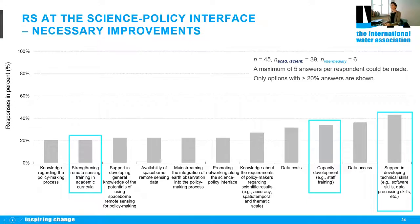We asked about necessary improvements to push EO for policymaking. Four major themes emerged as most important. The first was capacity development: building technical skills, training staff, and strengthening remote sensing training and academic curricula.